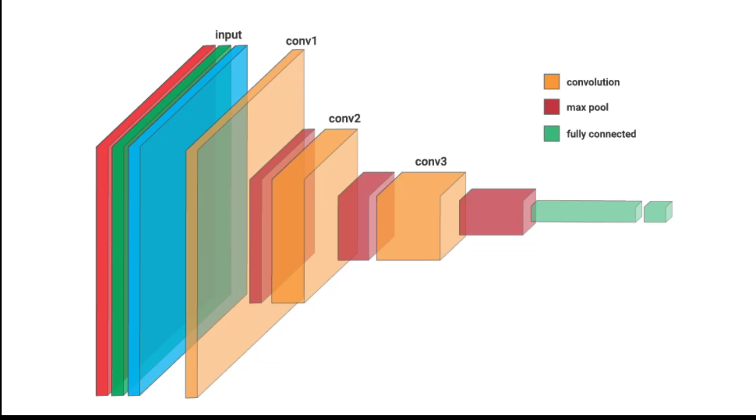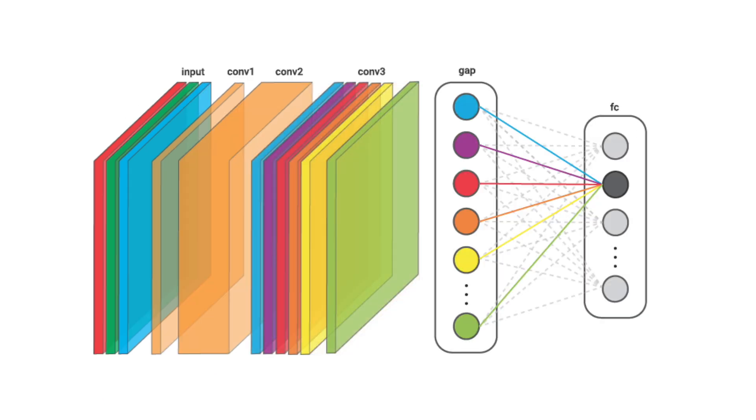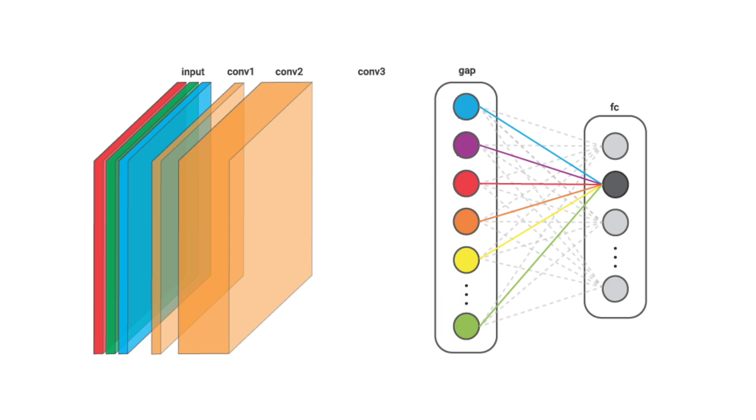GAP is a dimensionality reduction technique. When used in a neural network, it can be seen as an alternative to other pooling methods like max pooling or average pooling. These methods downsample a feature map by calculating a representative value for a region in the map. In comparison, GAP will calculate a single value for an entire feature map.